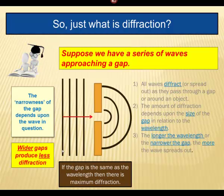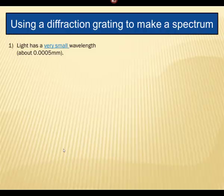Now, let's think about light. Now, light has a very small wavelength. It's about 0.0005 millimeters. That is a very, very tiny wavelength. Okay?